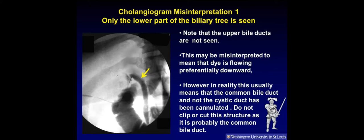Cholangiogram misinterpretation 1: Only the lower part of the biliary tree is seen. Notice in this cholangiogram that the upper ducts are not seen. This may be misinterpreted to mean that the dye is flowing preferentially downward. However, in reality, this usually means that the common bile duct and not the cystic duct has been cannulated. Do not clip or cut this structure as it is probably the common bile duct.